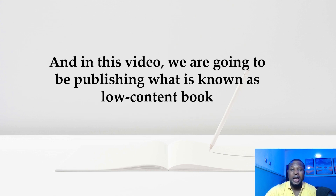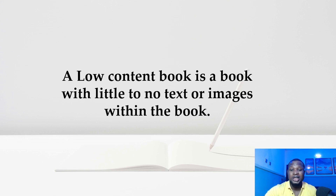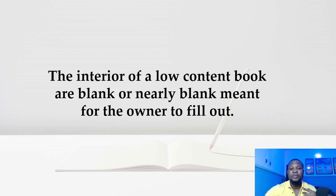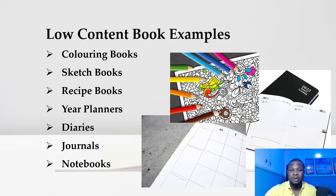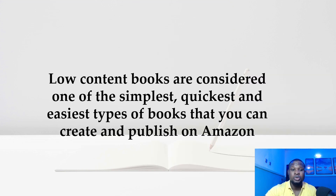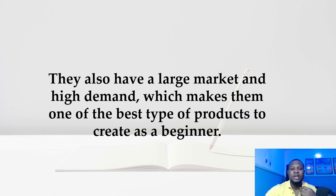In this video, we are going to be publishing what is known as a low content book. A low content book is a book with little to no text or images within it. The interior of a low content book is blank or nearly blank, meant for the owner to fill out. Here are some types or examples: coloring books, sketchbooks, receipt books, planners, diaries, journals, or notebooks. Low content books are considered one of the simplest, quickest and easiest types of books you can create and publish on Amazon. They also have a large market and high demand, which makes them one of the best types of products to create as a beginner.